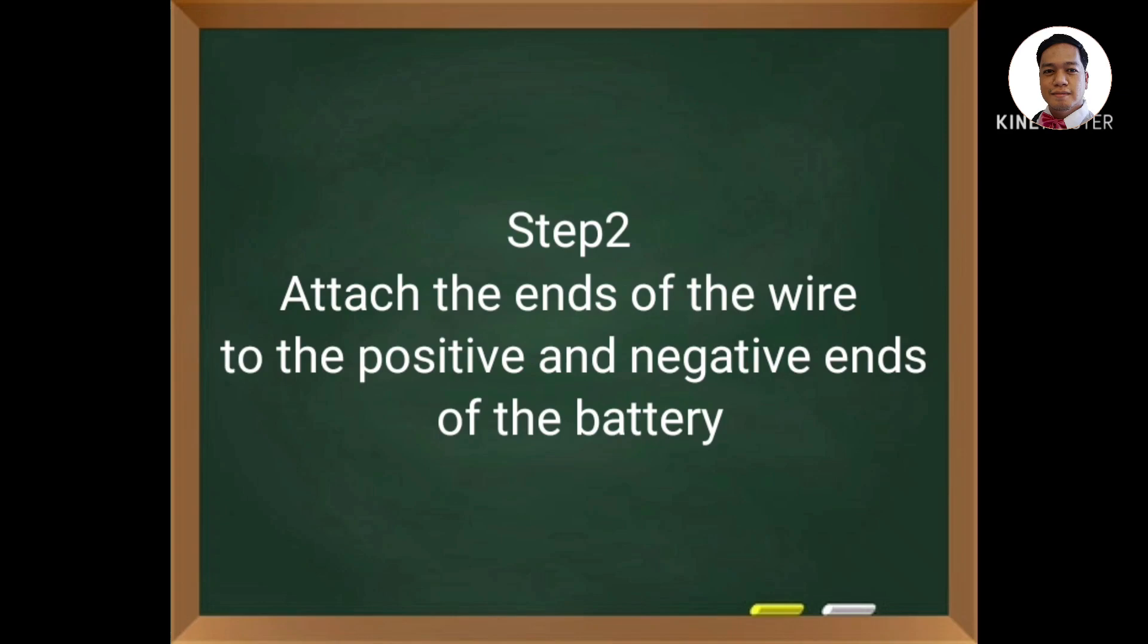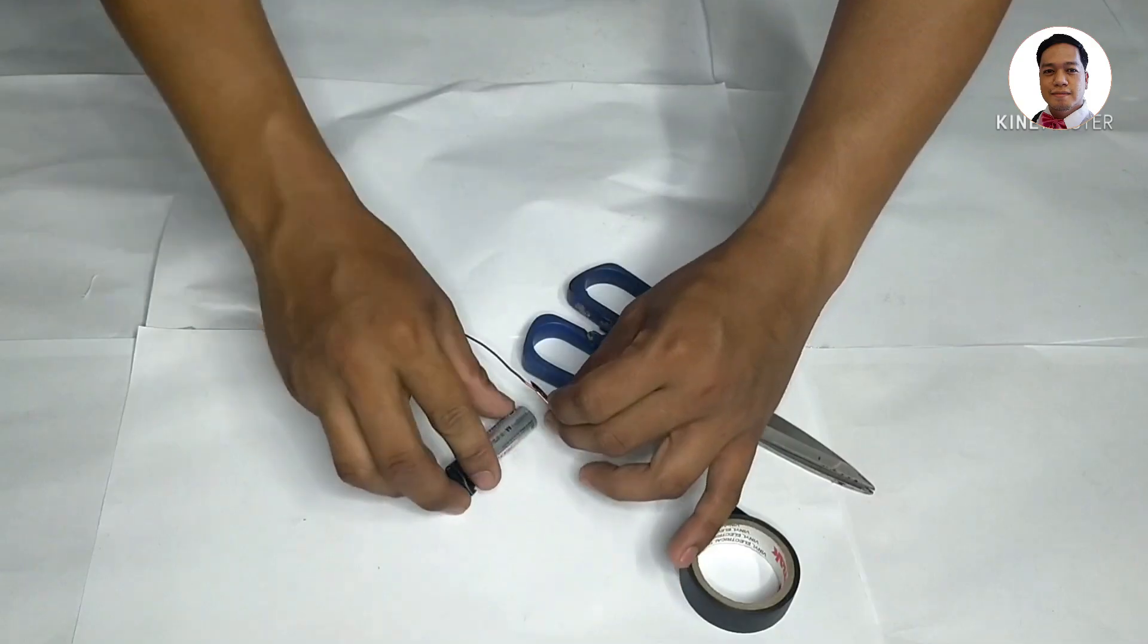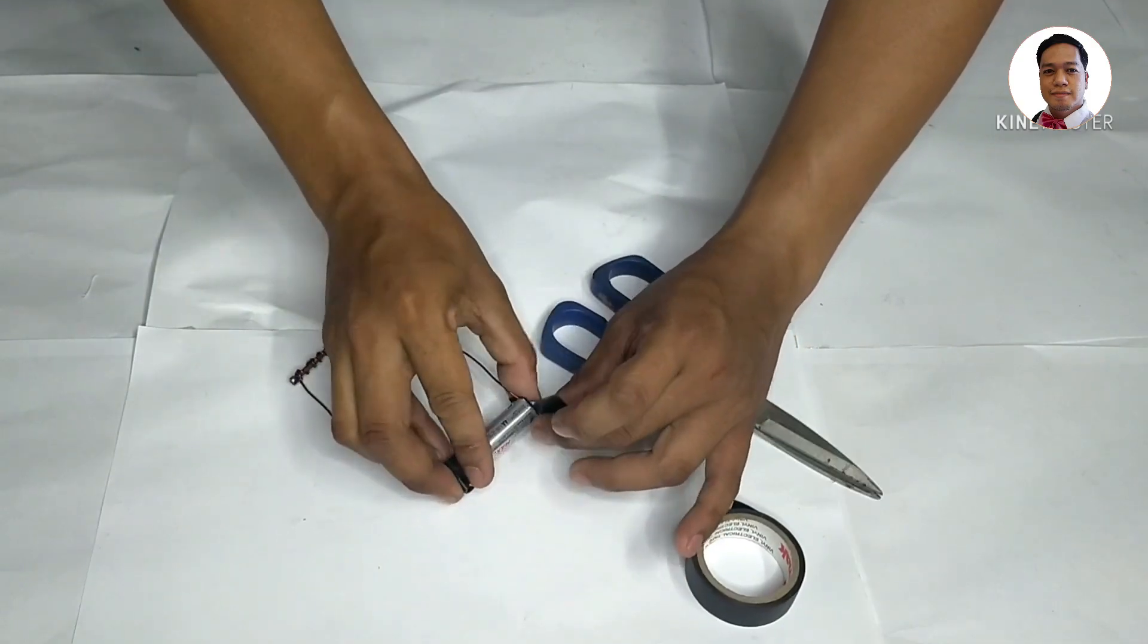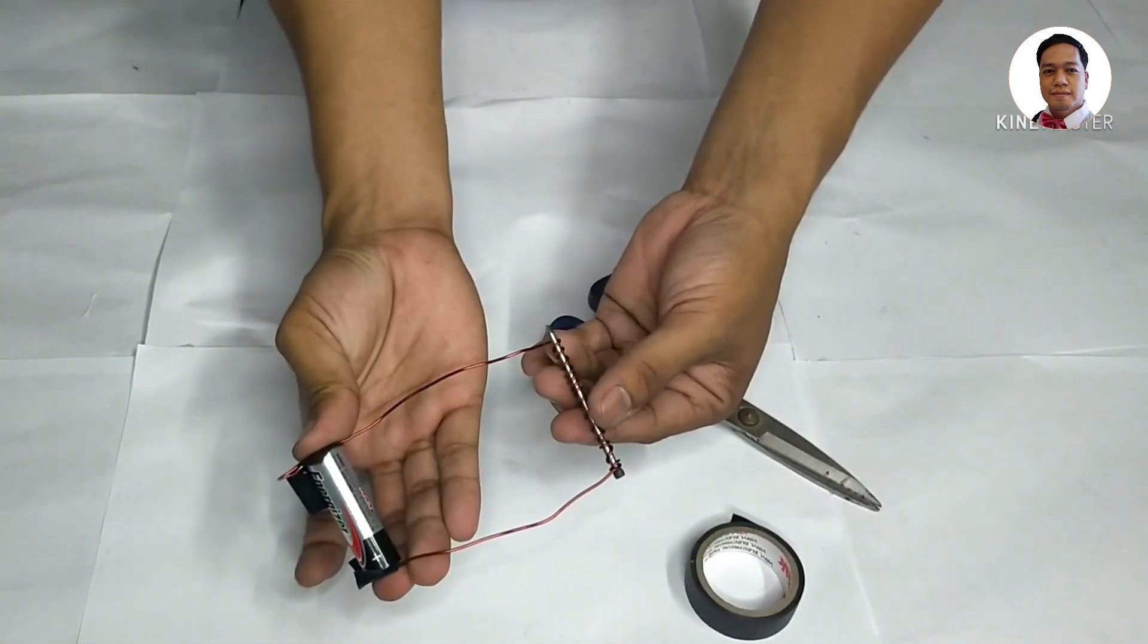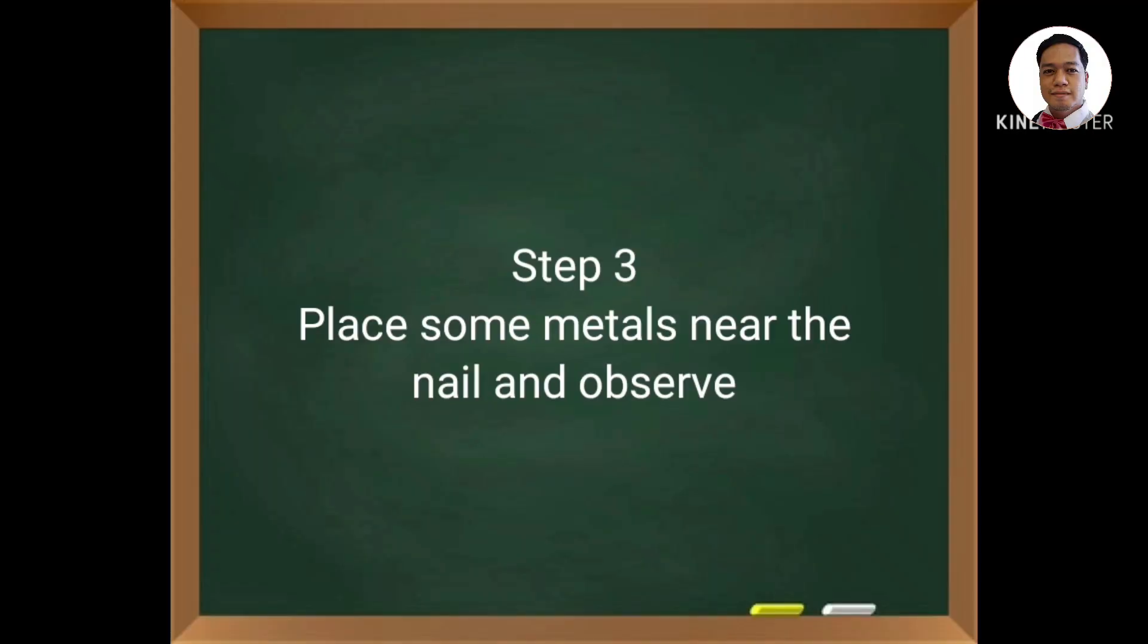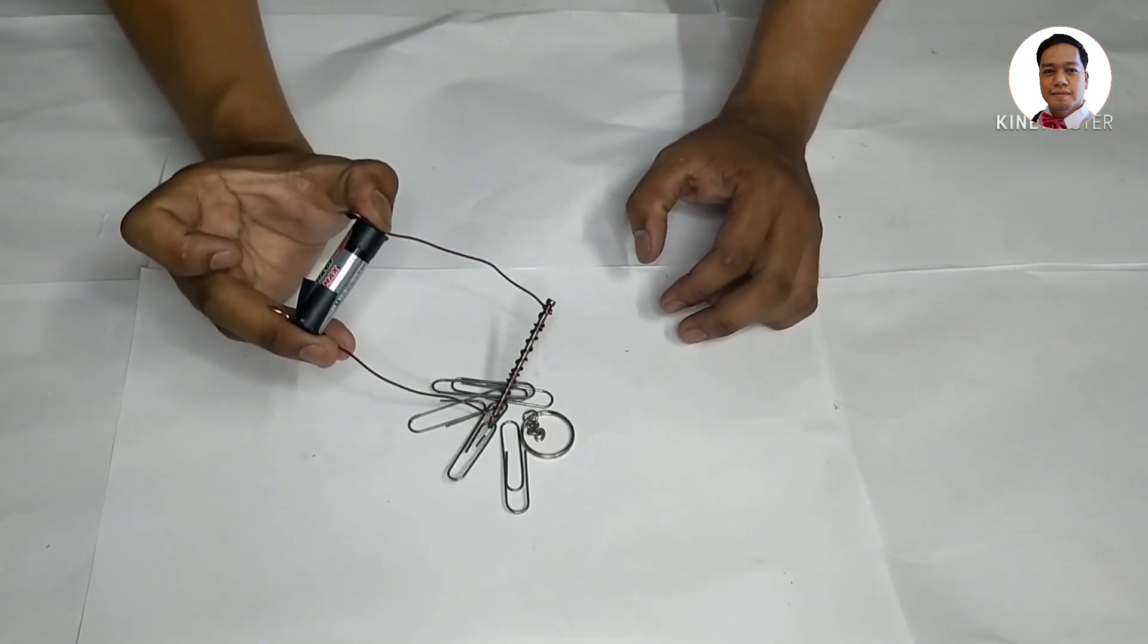Attach the ends of the wire to the positive and negative ends of the battery. Use gloves to protect your hands when the battery gets hot. Place some metals near the nail and observe. You may record your observations on the table.